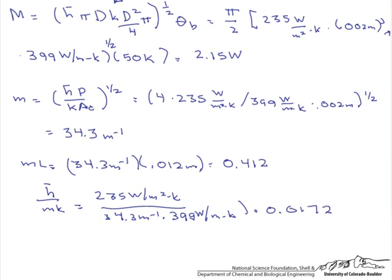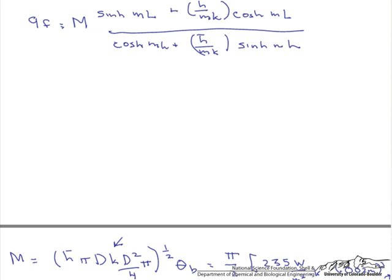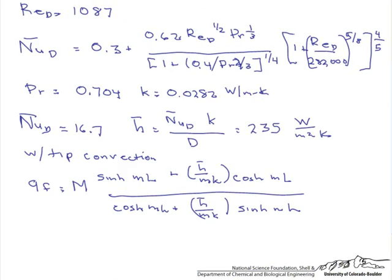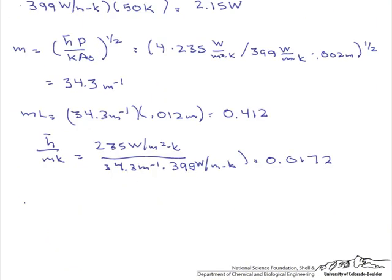So why do we need all this? Well let's go back here to our original Q sub F, which is what we are looking for. We have our big M. We have our little m times L. We now have our h bar over m times K. Now we can put it in the equation and find out exactly what our Q sub F is. So our Q sub F, when we put in the numbers, we find that it is 0.868 watts. So that is the Q just of the fin.